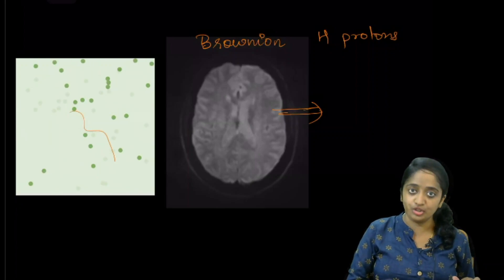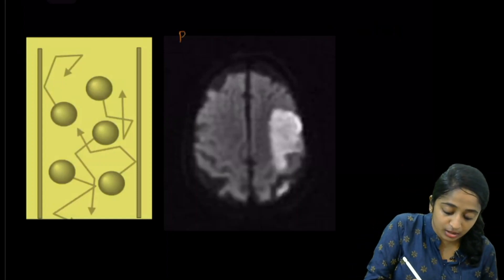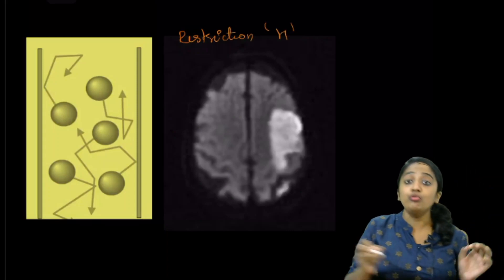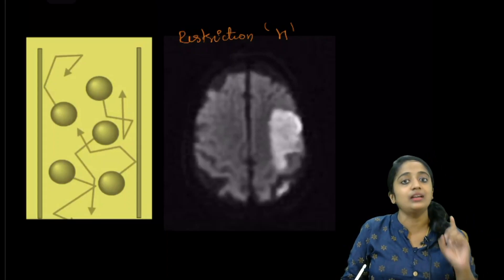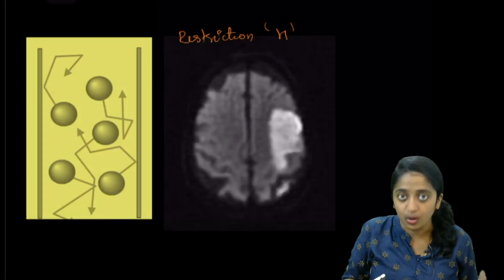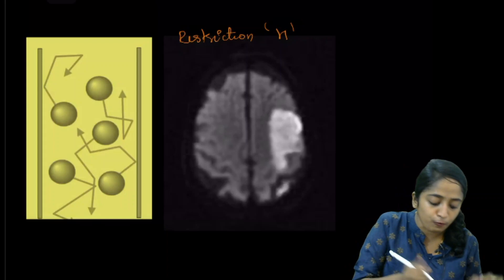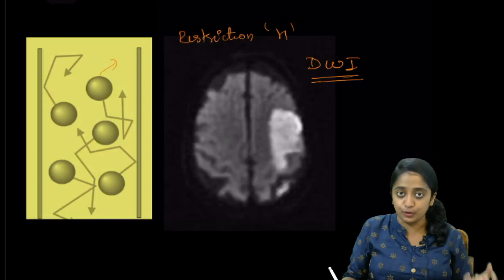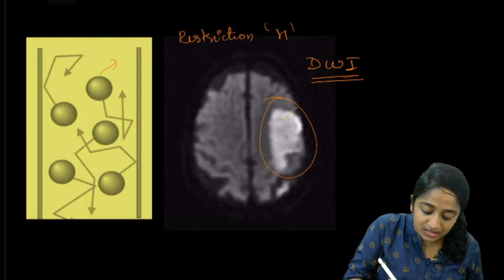In pathological conditions like infarct, there will be restriction of the motion of these water protons — they are no longer free to move. It is not just infarct; there are several neoplasms too that cause this. In infarcted tissue, there will be restriction of the motion of the water protons, and the diffusion-weighted imaging detects it to be restricted, giving you a bright signal.